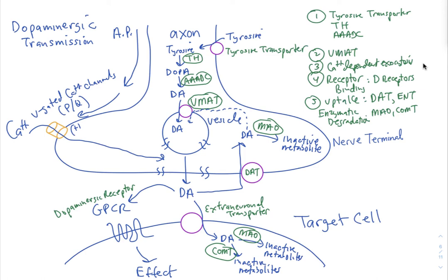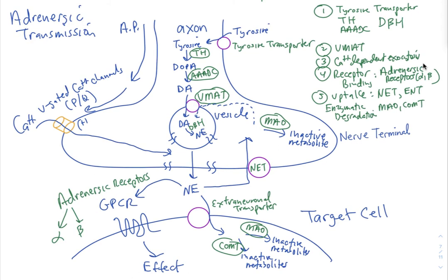Now let's look at adrenergic transmission, which is very similar to dopaminergic transmission. The pathway is identical up through dopamine synthesis, because dopamine is the precursor to norepinephrine. The extra enzymatic step is dopamine beta-hydroxylase, which puts a hydroxyl group on the beta carbon of dopamine to form norepinephrine — and this occurs inside the vesicle.